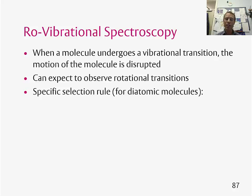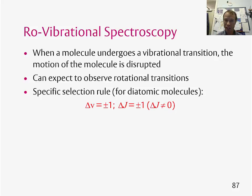For this process we again have a specific selection rule. If we have Δv equals plus or minus 1 — which is the case for the diatomic molecule in the harmonic approximation — at the same time we can get Δj equals plus or minus 1. Δj equals 0 is not allowed.